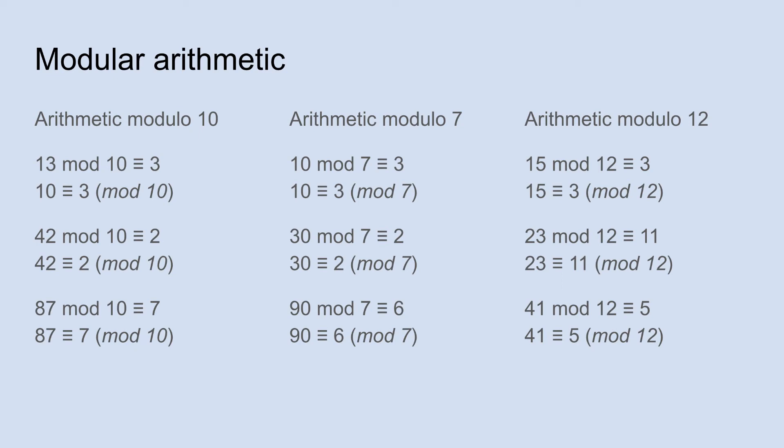And again, arithmetic modulo 10 is pretty straightforward because we use base 10. It just basically means ignore everything except for the units digits. So 42 mod 10 would be 2. 87 mod 10 would be 7.